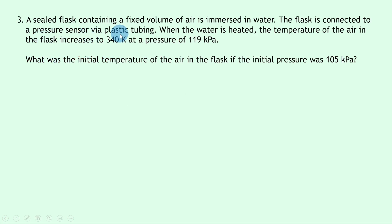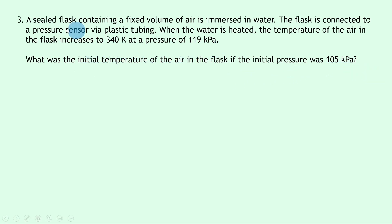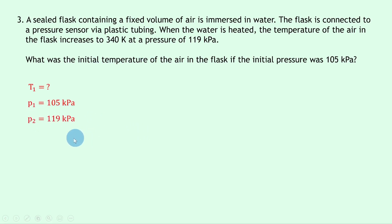Lastly, question 3 says that a sealed flask containing a fixed volume of air is immersed in water. The flask is connected to a pressure sensor via plastic tubing. When the water is heated, the temperature of the air in the flask increases to 340 Kelvin at a pressure of 119 kilopascals. What was the initial temperature of the air in the flask if the initial pressure was 105 kilopascals? Notice that we're given the final temperature in Kelvin here, so we don't need to convert from degrees Celsius. We're trying to find the initial temperature T1. P1 is 105 kilopascals, P2 is 119 kilopascals, and T2 is 340 Kelvin.